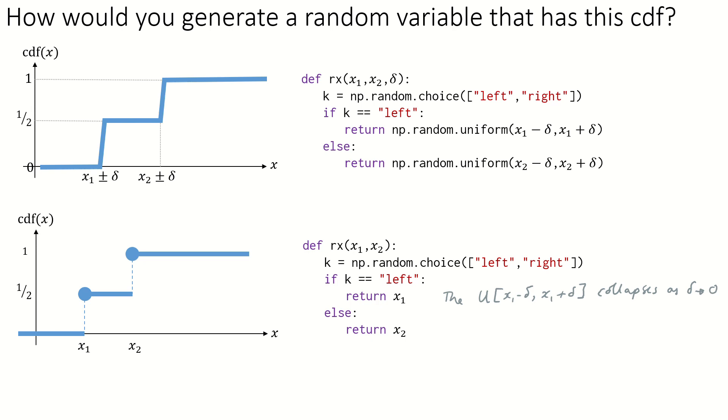Well, actually, this is a daft way to write this code. All this code does is return x1 with probability of half, return x2 with probability of half, and we can write it much more simply, np.random.choice of x1, x2. This just returns one of them, chosen at random, each equally likely.